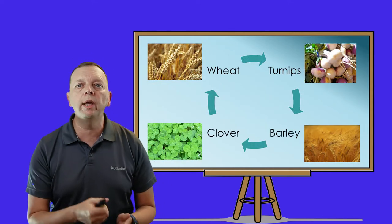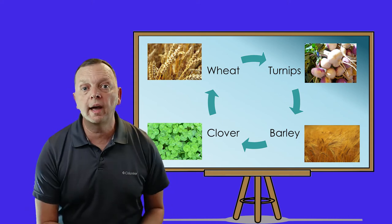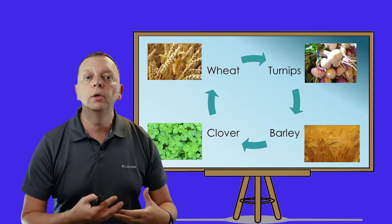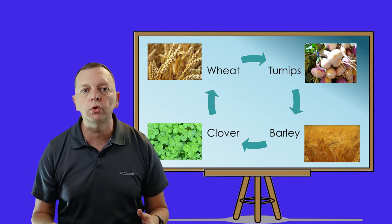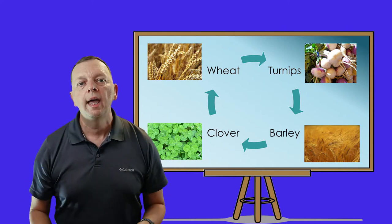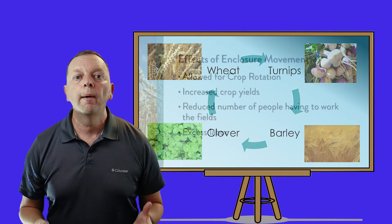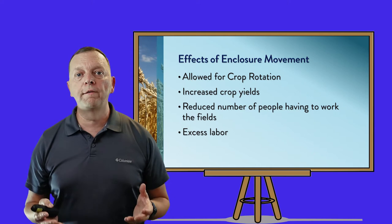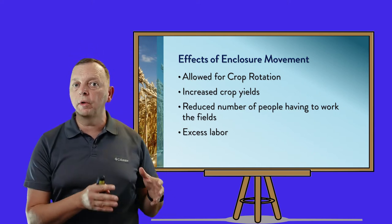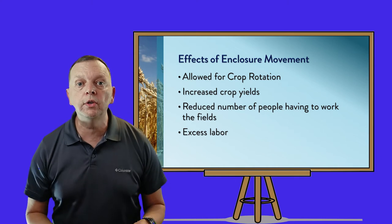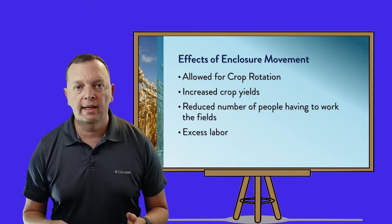The enclosure movement allowed for something incredibly important in agriculture called crop rotation. This meant that one year you would have wheat, one year turnips, one year barley, one year clover, and then on the fifth year you would grow wheat again. What this does is allow the nutrients of the soil to be replenished. Crop rotation allowed farmers to produce more and more food, and because you could have more food with fewer people, this actually reduced the number of people that had to work in the fields, providing excess labor.